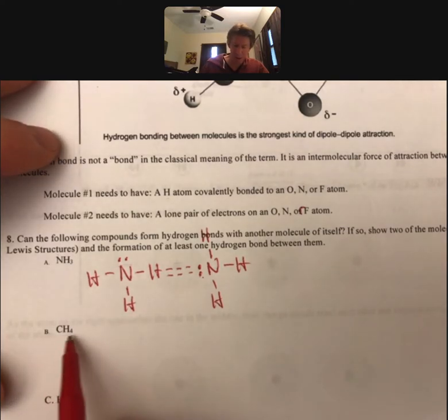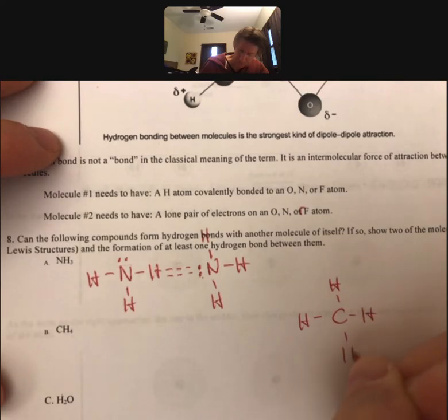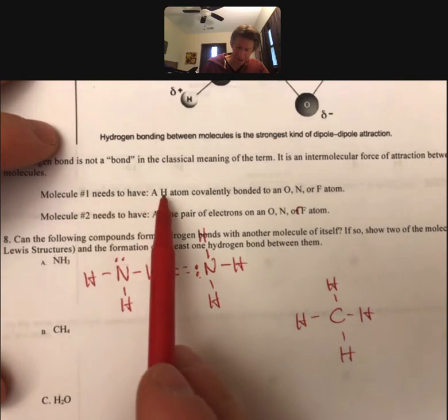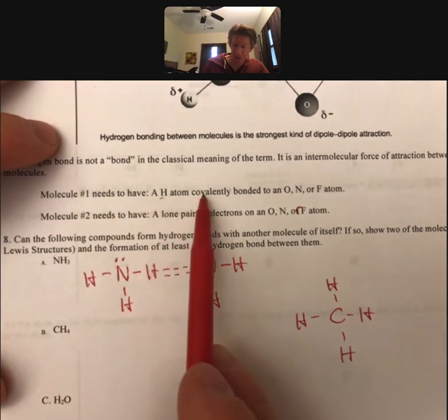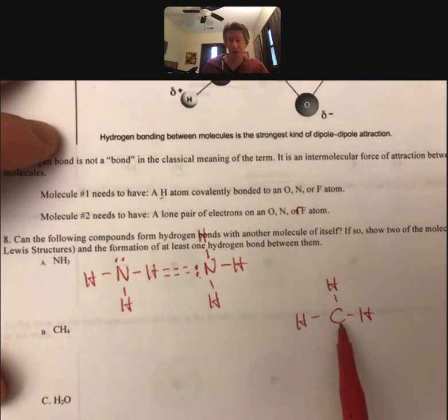Let's do CH4 now. And CH4, well, let's start by drawing its Lewis structure. CH4 does not have a hydrogen atom covalently bonded to an O, N, or F. All of these hydrogens are covalently bonded to carbon.